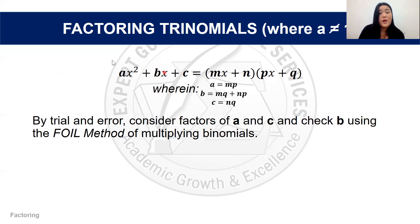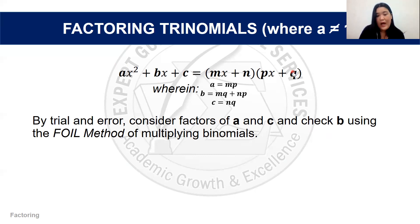What if the numerical coefficient of our leading term x² is not equal to 1? We use the form ax² + bx + c, where a is the product of m × p, b is the sum of products m × q and n × p, and c is the product of n × q. By trial method, we consider factors of a and c and check b using the FOIL method.